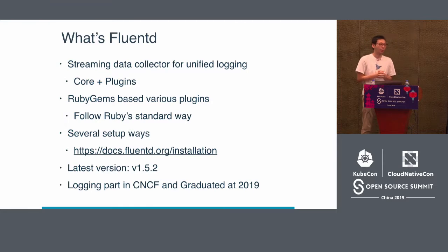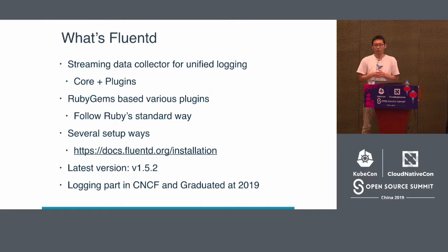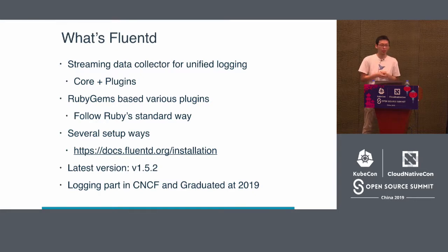Fluentd provides several approaches for setup. You can use RPM or Deb packages for CentOS, Ubuntu, or Debian. The Fluentd community also provides MSI packages for Windows, so you can run Fluentd on Linux and Windows. Fluentd is a logging project under the CNCF and is used in Kubernetes. It also integrates with other CNCF products — for example, Fluentd has a Prometheus plugin to expose Fluentd metrics, so you can monitor Fluentd instances using Prometheus.